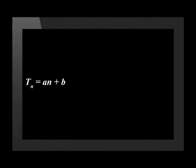In a linear number pattern, the variable n is to the power of 1. A quadratic sequence is generated by the formula tn equals an squared plus bn plus c. The power of n is 2, and this tells us that we have a quadratic formula.